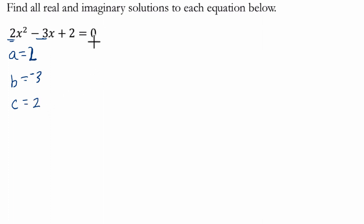And then I use my quadratic formula. x equals negative b, so negative negative 3 is positive 3, plus or minus the square root of b squared, which is negative 3 squared, or 9, minus 4 times a times c, so 4 times 2 times 2, which is 16, over 4.